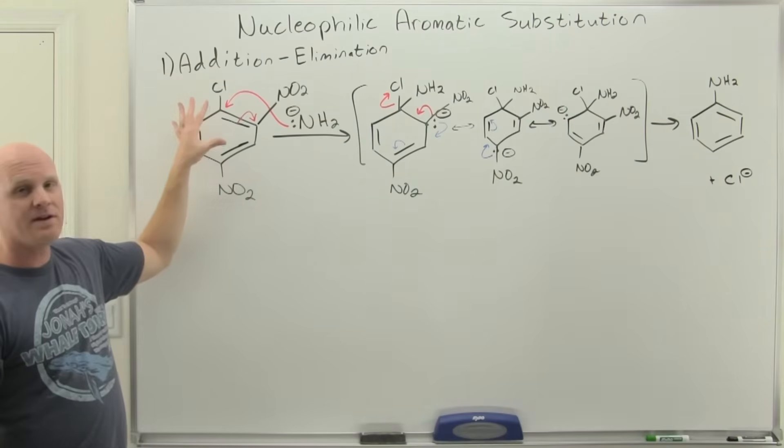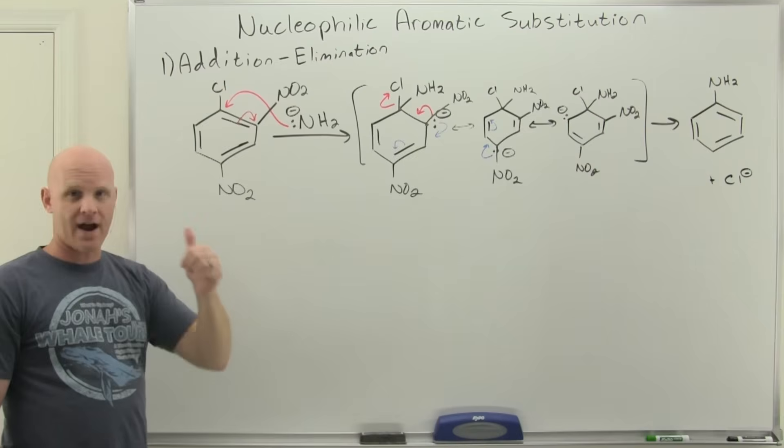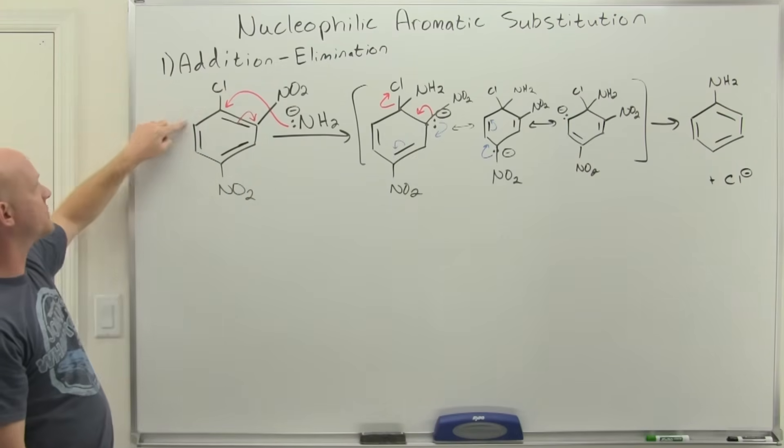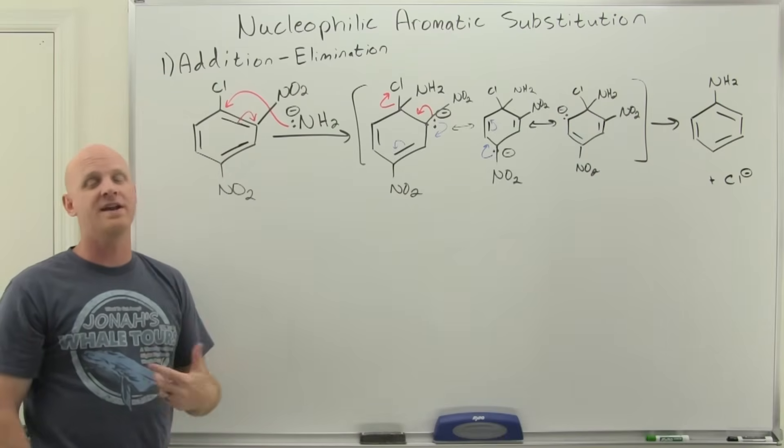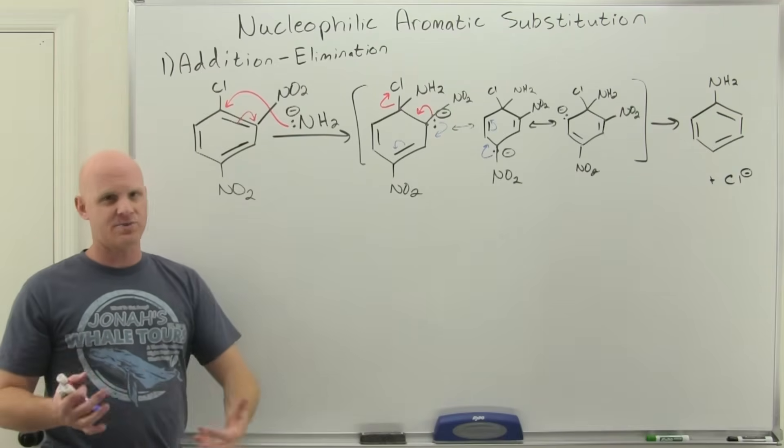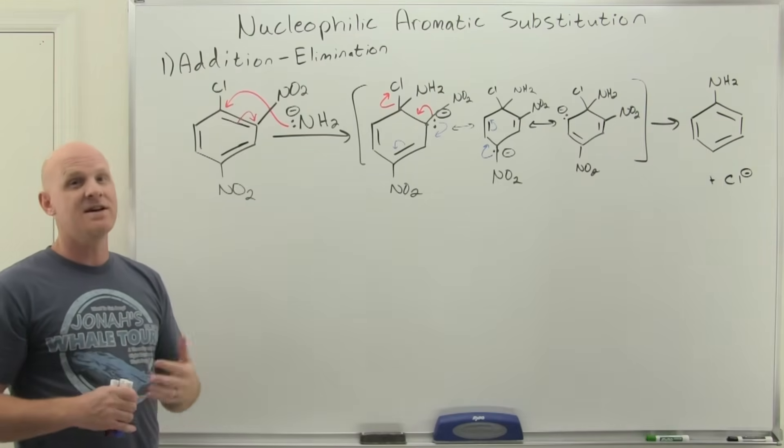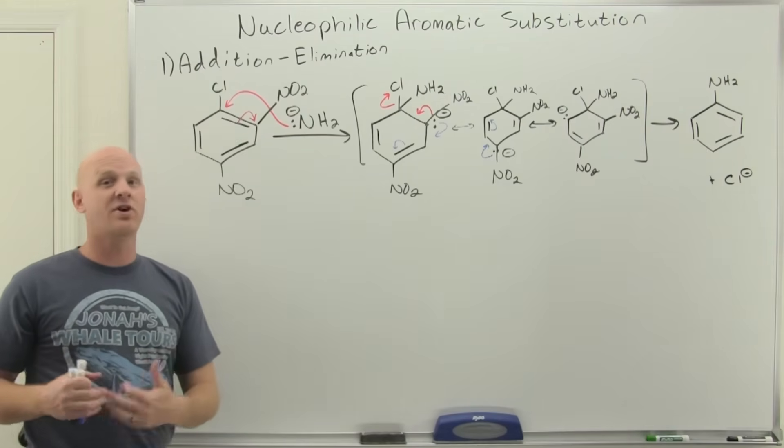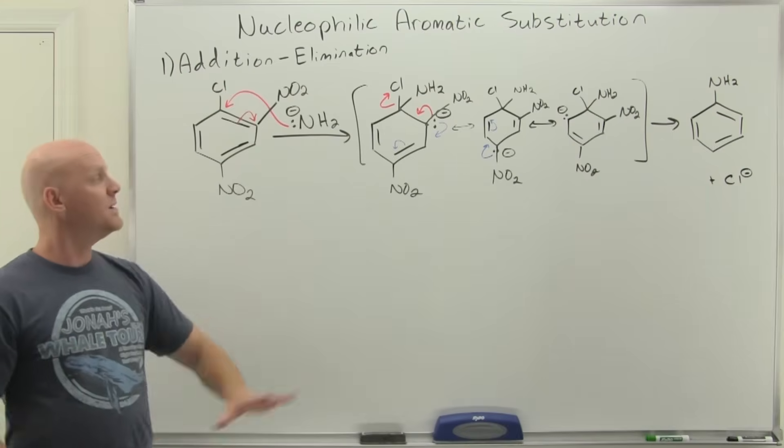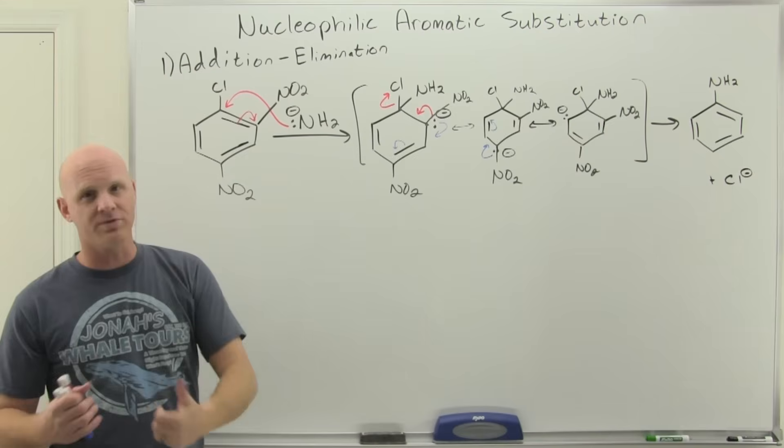If you look at reactivity of typical aryl halides here for NAS reactions, the stronger the electron withdrawing groups, the more reactive, and the more of them you have in the ortho and para positions. If I attach another nitro group over here in the other ortho position, it would be even more reactive in an NAS reaction. Sometimes the question you'll get is, which of the following would be most reactive in an NAS reaction? And so now you want electron withdrawing groups, not donating. If you recall with EAS reactions, the intermediate was the sigma complex, a carbocation. So it's donating groups that would help stabilize that electron deficient carbocation. But now we have a carbanion intermediate instead, and so now we want electron withdrawing groups to help stabilize it instead.